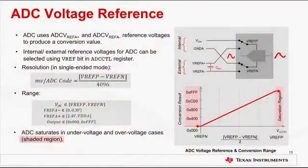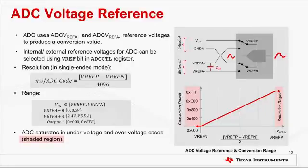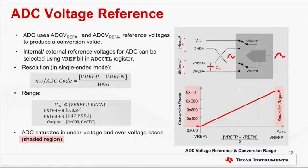The ADC uses VREF-P and VREF-N as the reference voltages to produce a conversion value from the selected analog input. The reference voltages can be supplied from within the chip or from an external voltage source. VREF-P can be connected to either VDD-A or VREF-A+, and VREF-N can be connected to either GND-A or VREF-A-. This can be configured by setting the VREF bit in the ADC control register. In single-ended mode, the ADC resolution can be expressed as the difference of positive and negative reference voltages over the maximum number of ADC steps. The conversion result will vary from 0x000 to 0xFFF for the input voltage range from the negative reference voltage all the way to the positive reference voltage.